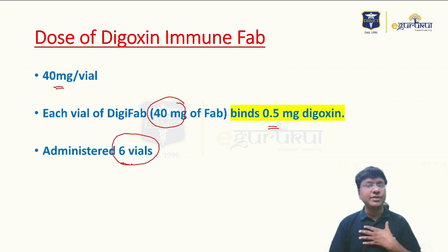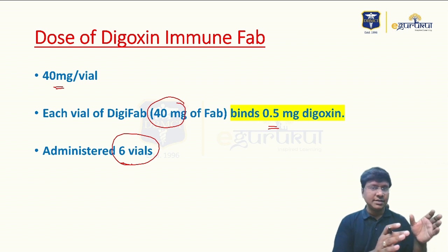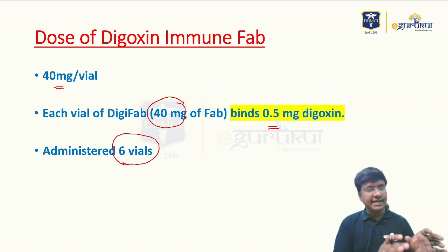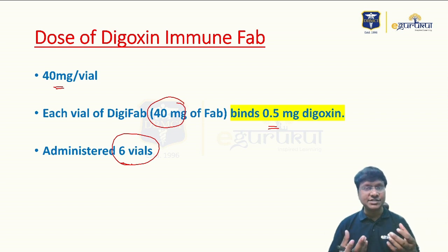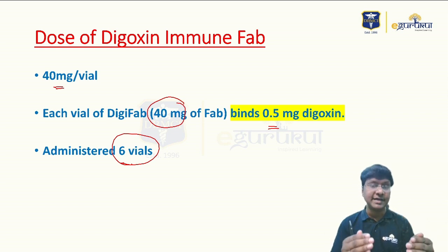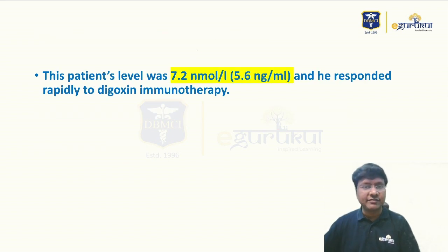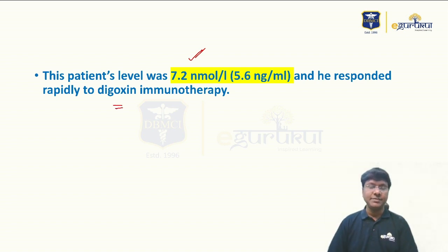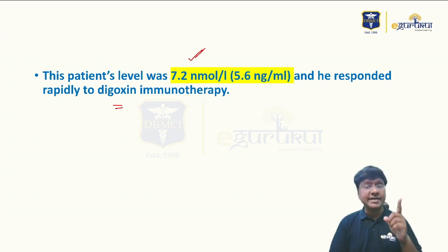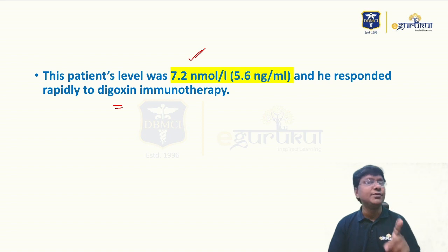The key learning from this session is not just recognizing the Salvador Dalí sign or inverted tick sign, but knowing how much antibody to give — the dosage of Digoxin Immune Fab. Our patient had 7.2 nanomoles per liter and responded rapidly to digoxin immunotherapy. The take-home message is that an individual with digoxin levels more than 6.5 nanomoles per liter is a candidate for Digoxin Immune Fab.